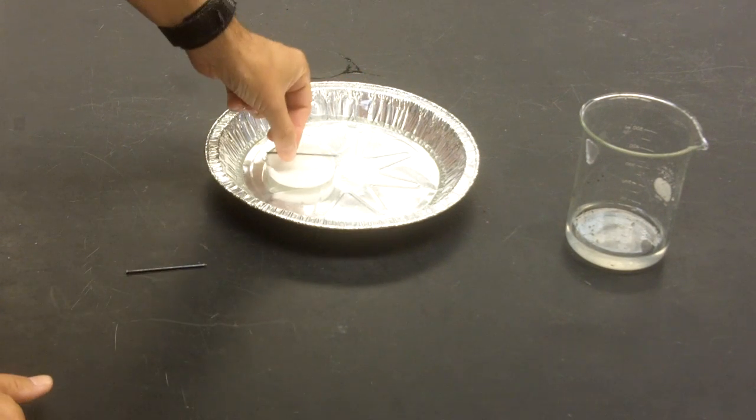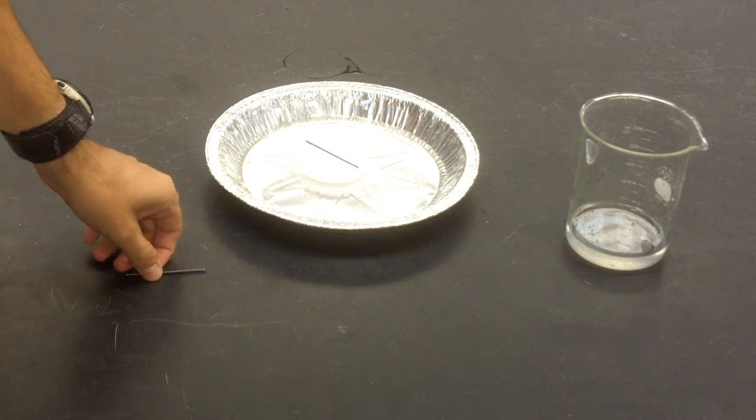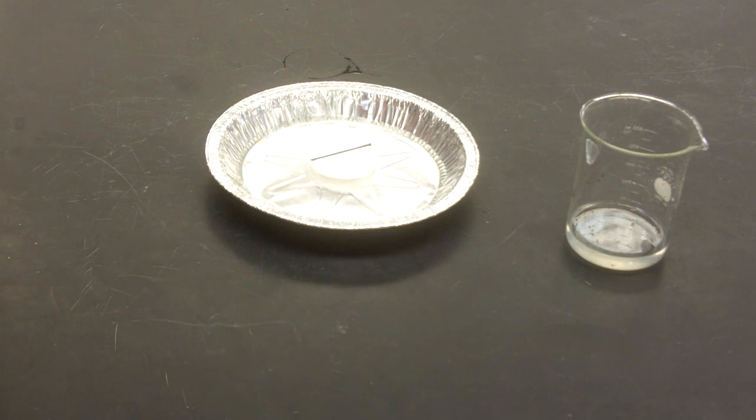Now I'm going to put the magnet off to the side. I'm going to put the nail in the little floater so it can spin freely. Let's just let it stop.